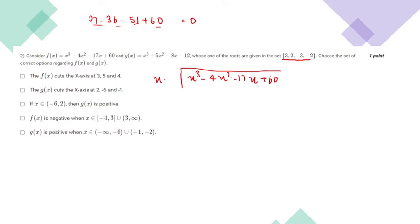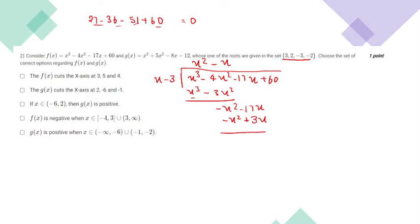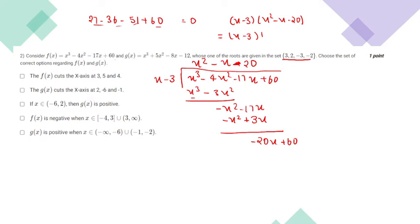Performing the polynomial long division, we get x squared minus x minus 20 as the quotient. So the factorization of f(x) is (x minus 3)(x squared minus x minus 20), which equals (x minus 3)(x minus 5)(x plus 4).